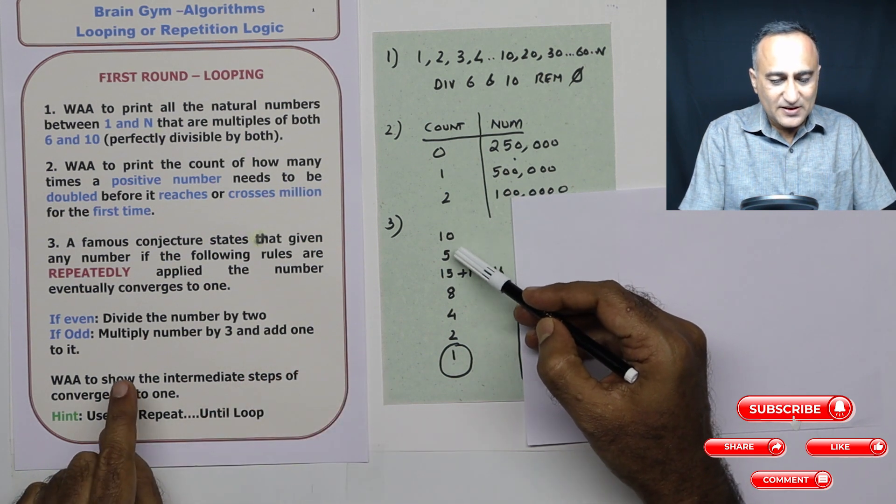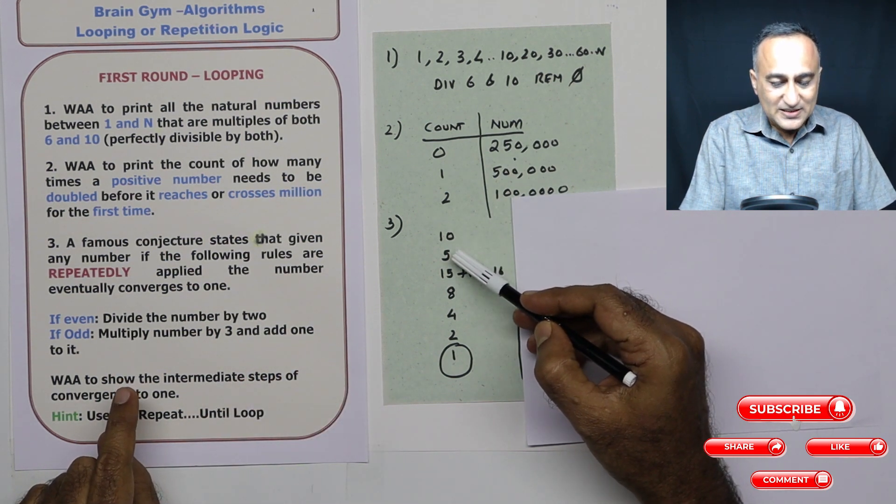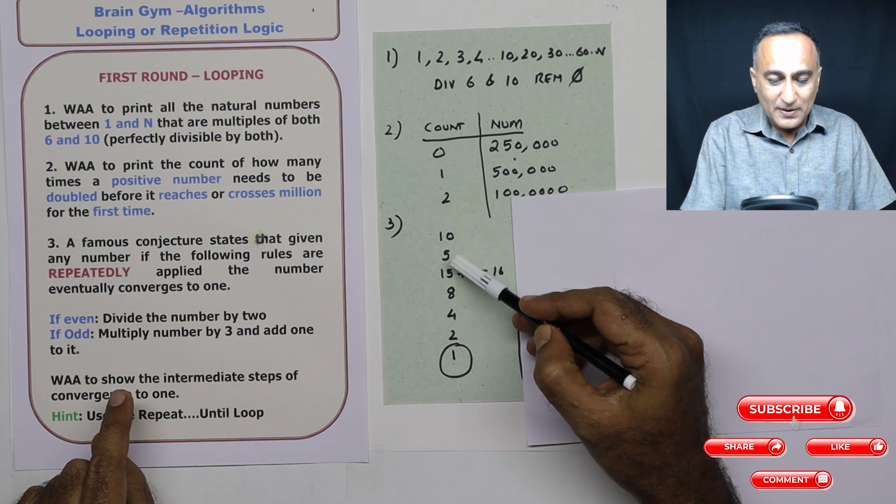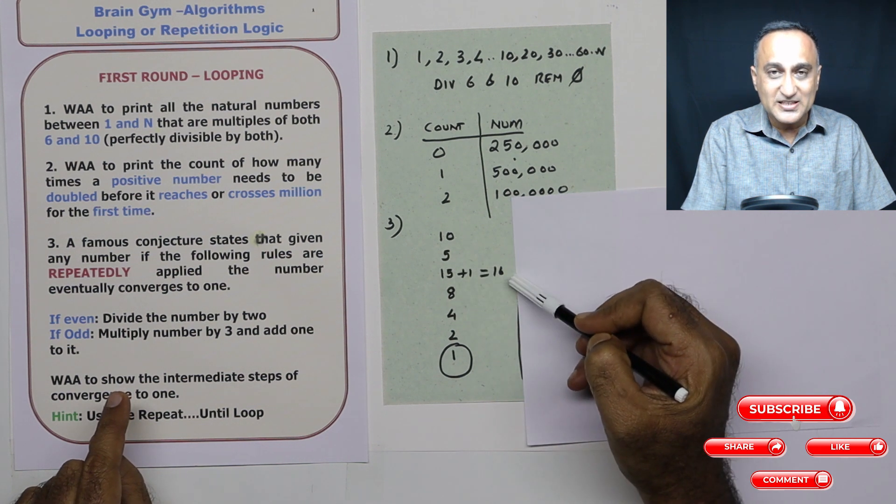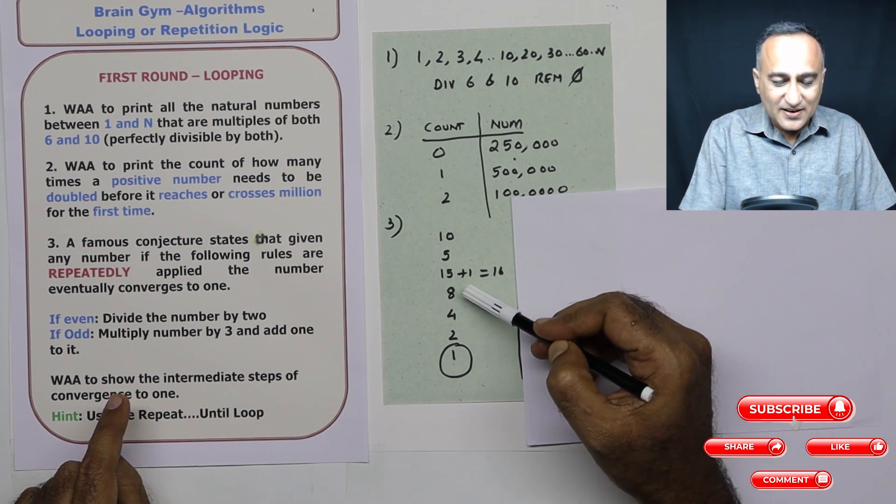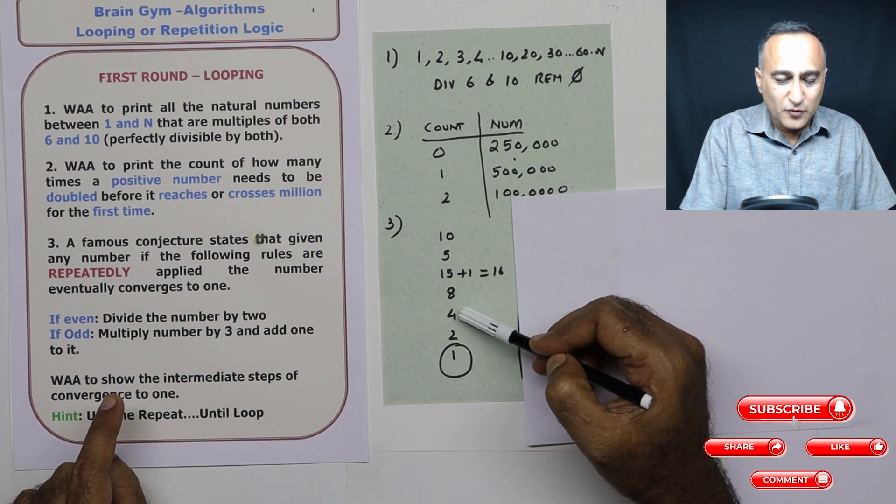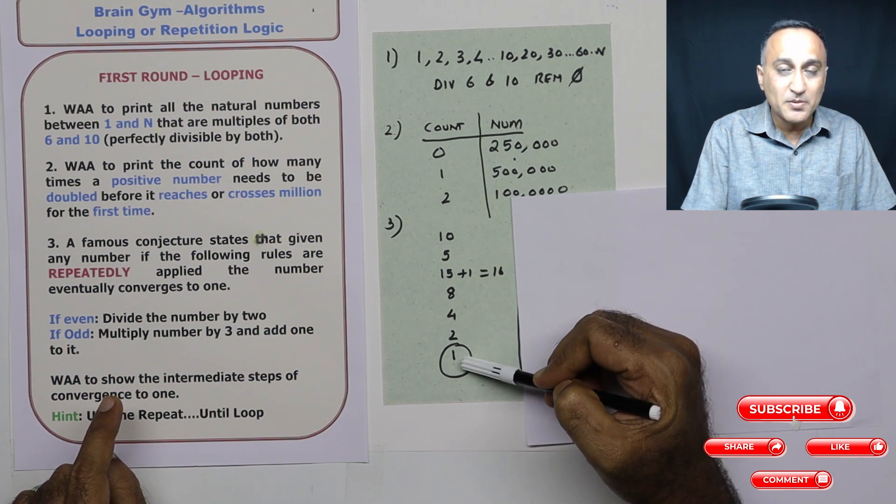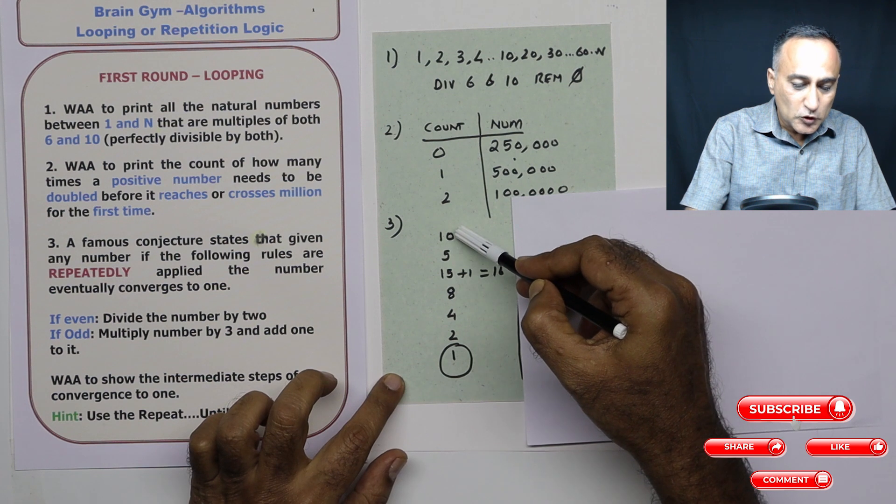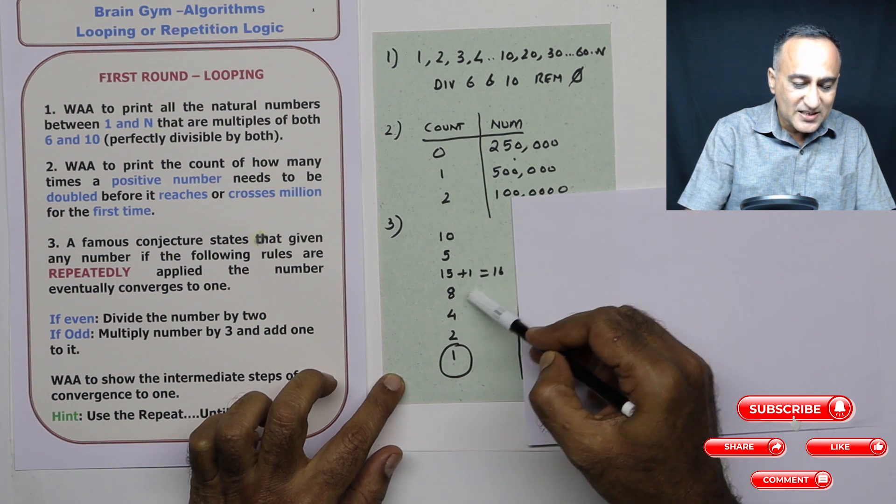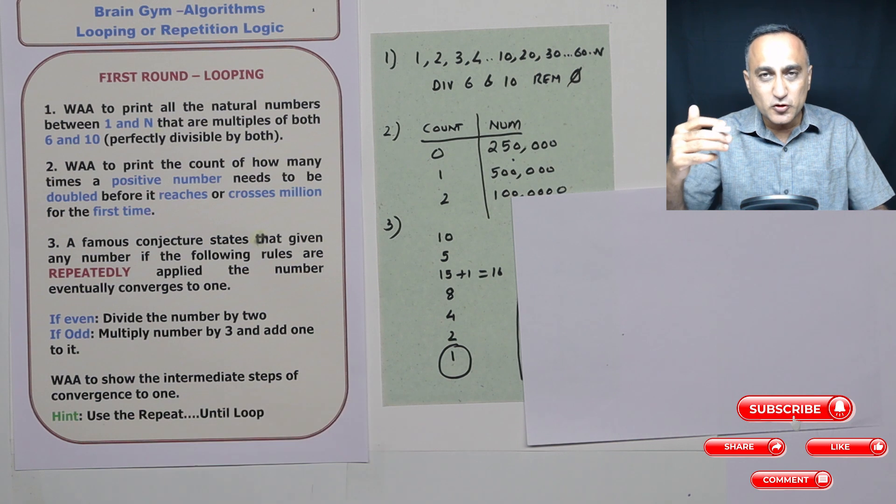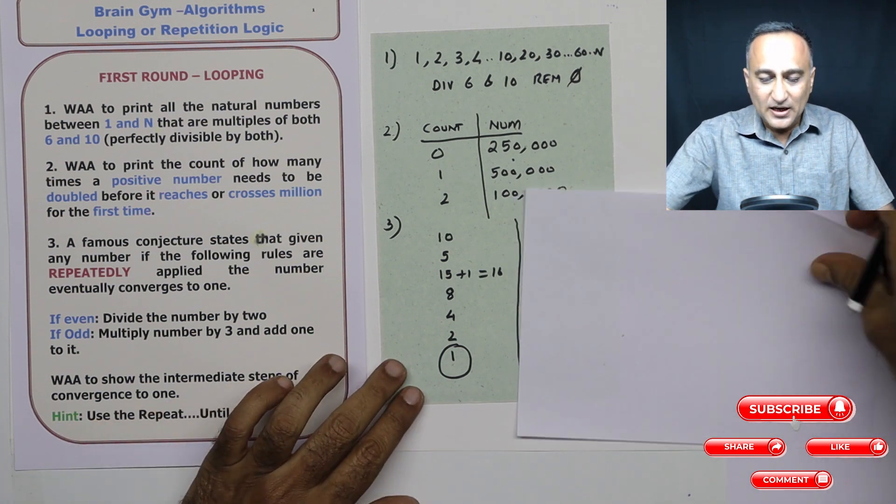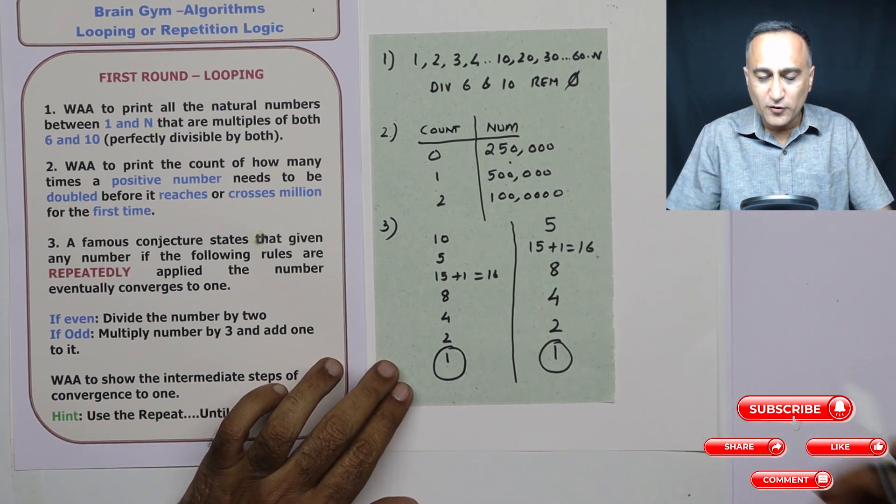Then since it's even it becomes five. Five is odd. So five becomes five into three plus one becomes 16. Now 16 gets divided to eight, eight gets divided to four, four gets divided to two, and finally number becomes one. So you need to show me all these steps: 10, five, 16, eight, four, two, one steps. In the sense, you should show the output on the screen. A better example in a larger font.